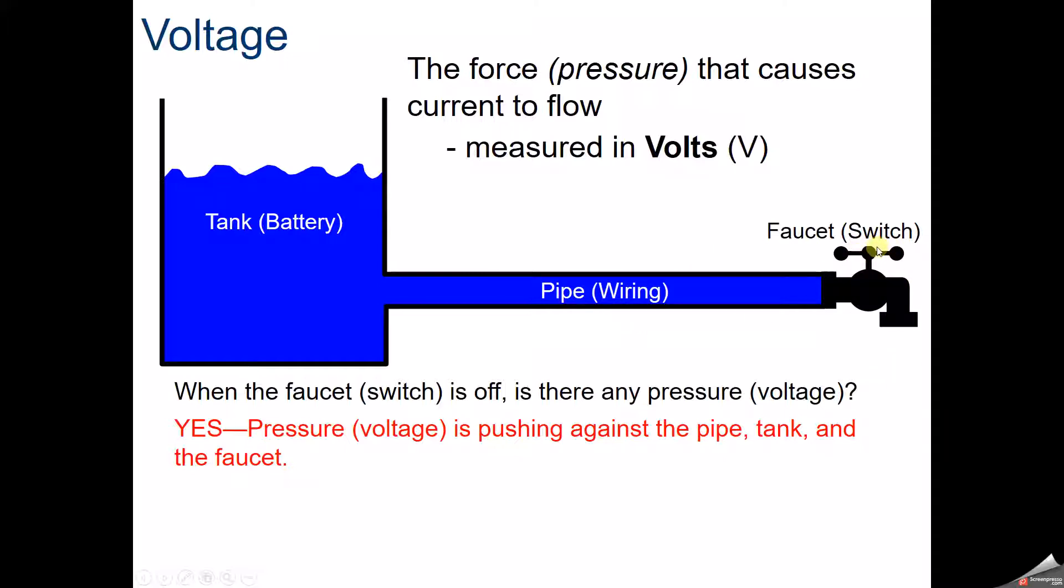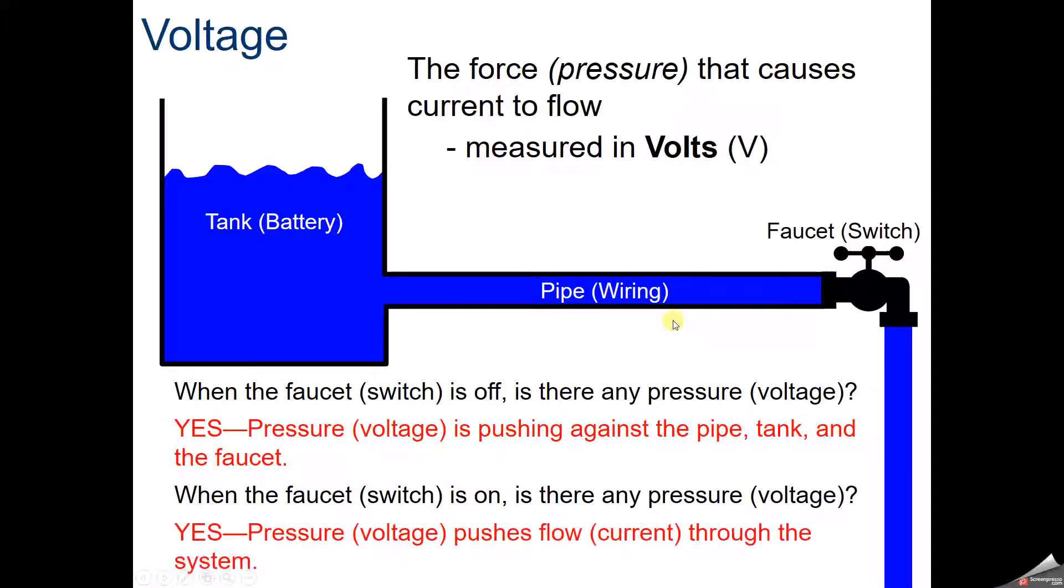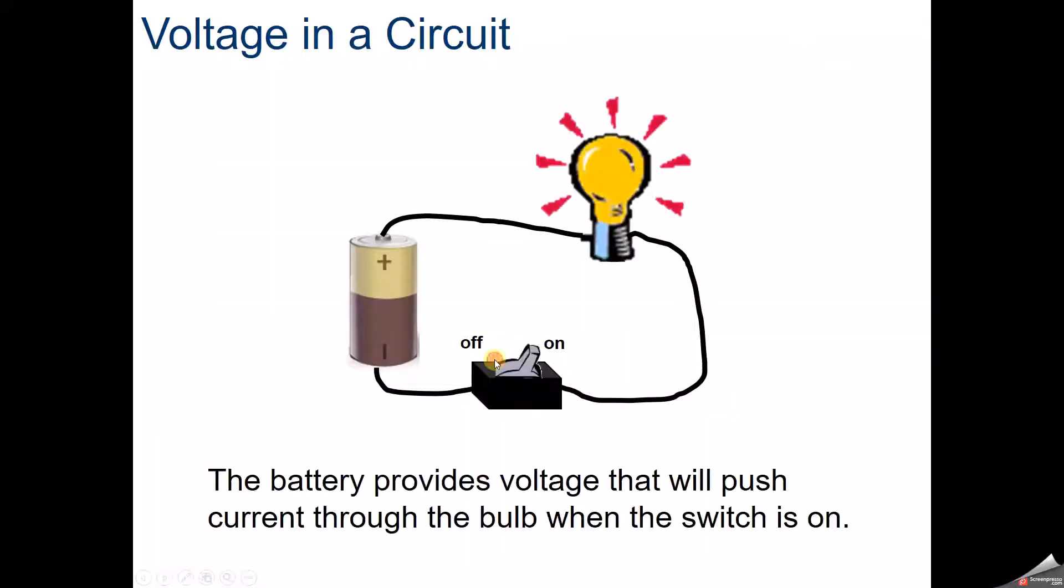What happens when we turn that switch or faucet on? Is there pressure? Yeah, there's pressure because it's pushing current through the system. So when it's off, there's voltage. When it's on, there's voltage. But when it's on, it's now going in a complete cycle to turn that light on.